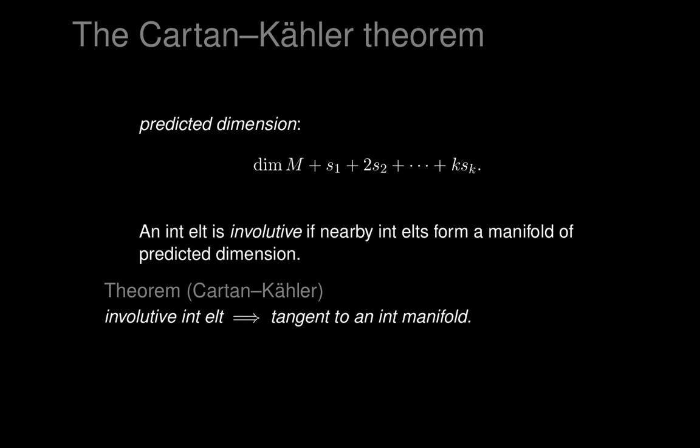To recap: given an integral flag, we calculate polar equations for each element of the flag using just linear algebra, obtaining dimensions S_0, S_1, and so on. We plug them into the formula for predicted dimension and check involutivity. The one non-linear step is deciding whether nearby integral elements form a manifold of the predicted dimension — that requires writing out all nearby integral elements and seeing if they can be parametrized as a manifold. If so, we get an involutive integral element, and therefore an integral manifold exists.